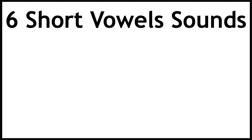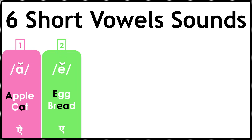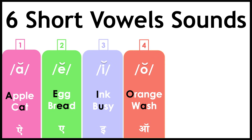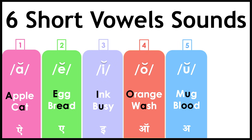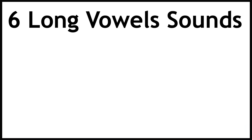Let's start with the six short vowel sounds: /a/ — apple, cat; /e/ — egg, bread; /i/ — ink, busy; /o/ — orange, wash; /u/ — mug, blood; /ʊ/ — book, pull. These are the six short vowel sounds.